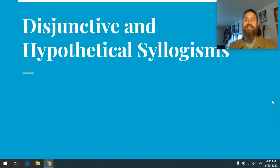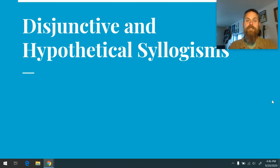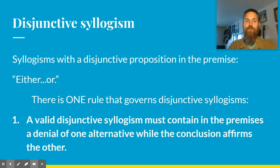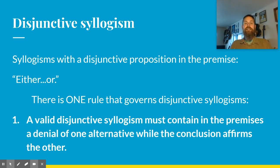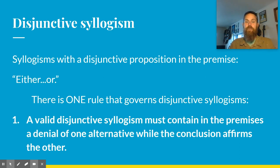We've got two more kinds of syllogisms we're going to look at: disjunctive and hypothetical. Let's start with disjunctive because these play by their own rules. The good news about the disjunctive syllogism is that it has only one rule — it's simple and easy to remember. A disjunctive syllogism is a syllogism with a disjunctive proposition in the premise, meaning it's an either-or kind of premise.